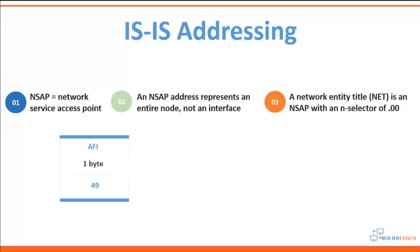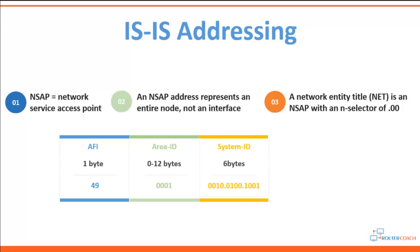The NSAP addressing format starts with an AFI, the Address Family Identifier. If IS-IS is running CLNS, you need to obtain the address from ISO. If you're routing IP, many service providers simply use 49, which is similar to RFC 1918 private addresses — not routable across the internet but locally significant. The area ID follows, and must match for level-one adjacencies, though level-two routers can form adjacencies across different areas. Next is a six-byte system ID, and finally the nselector, which is one byte set to 00.